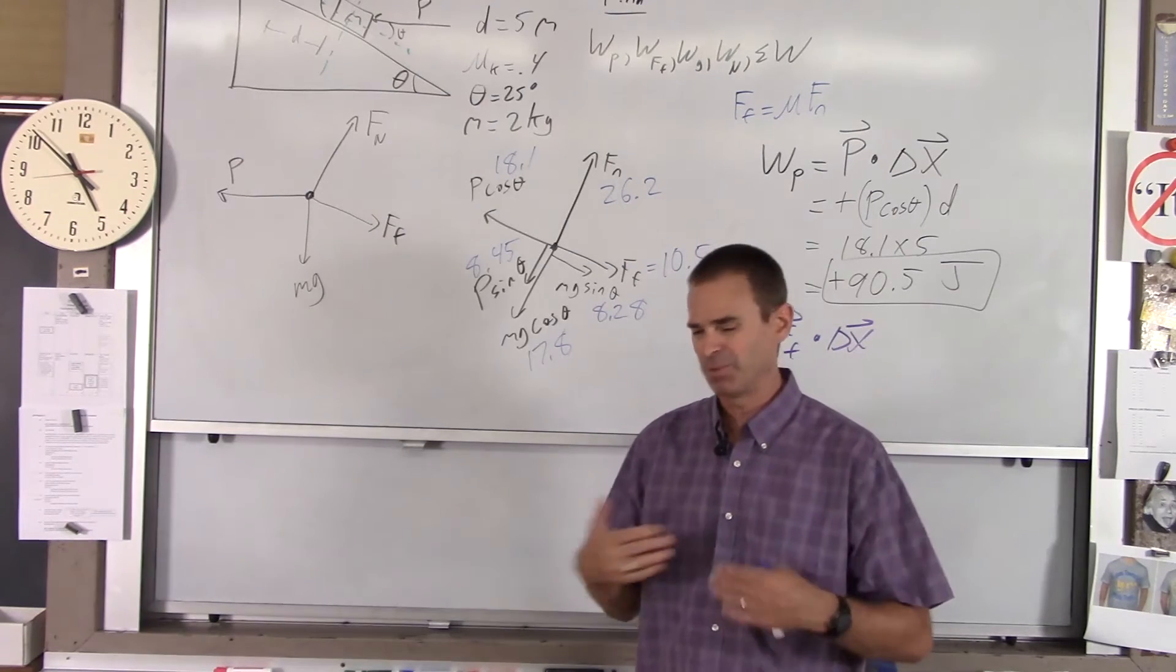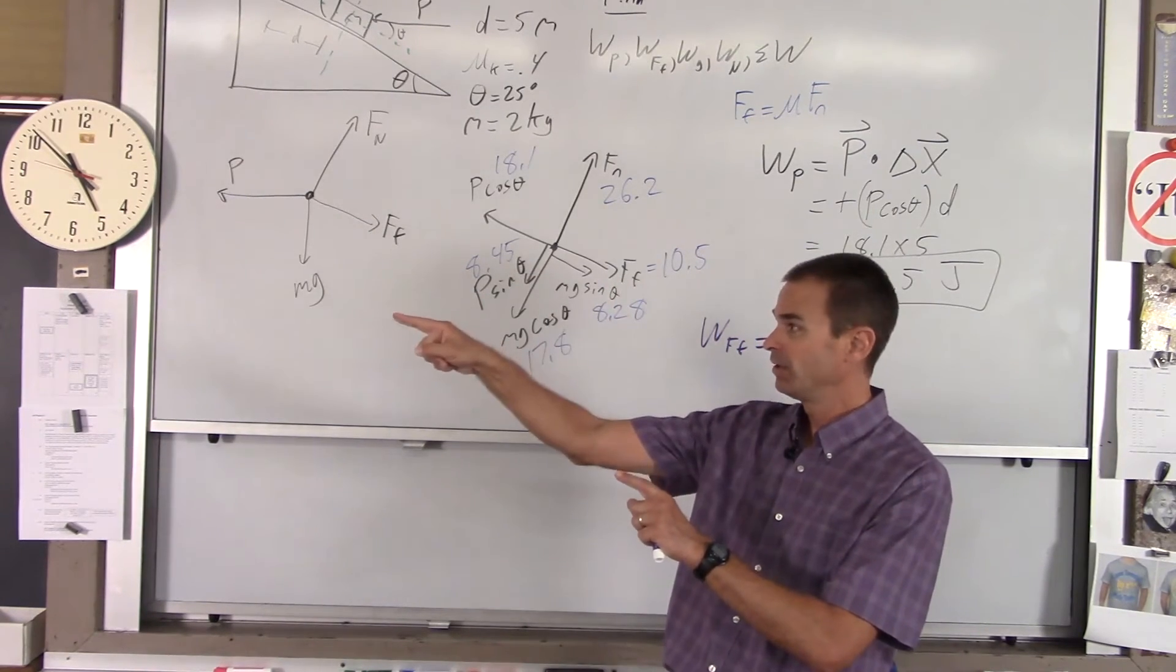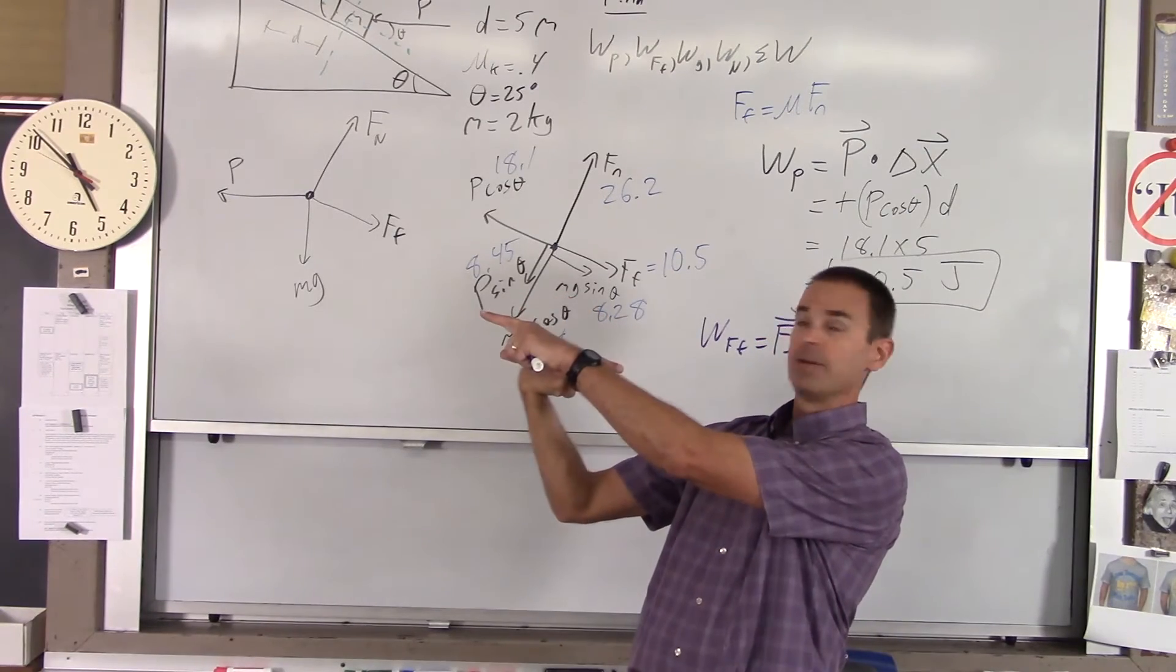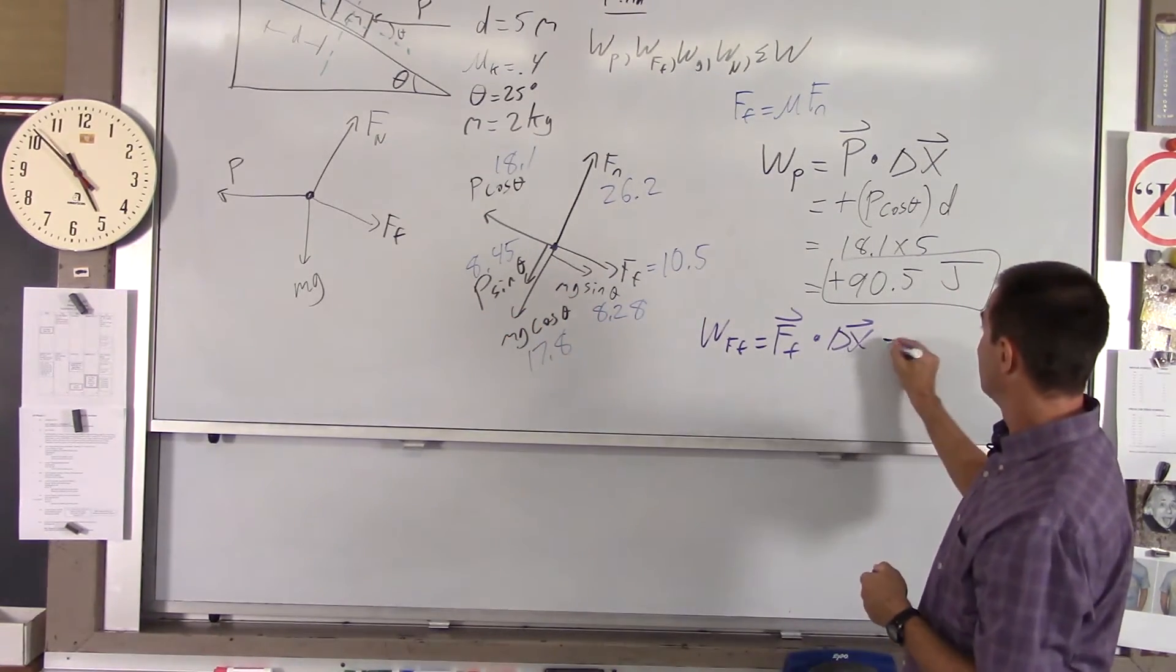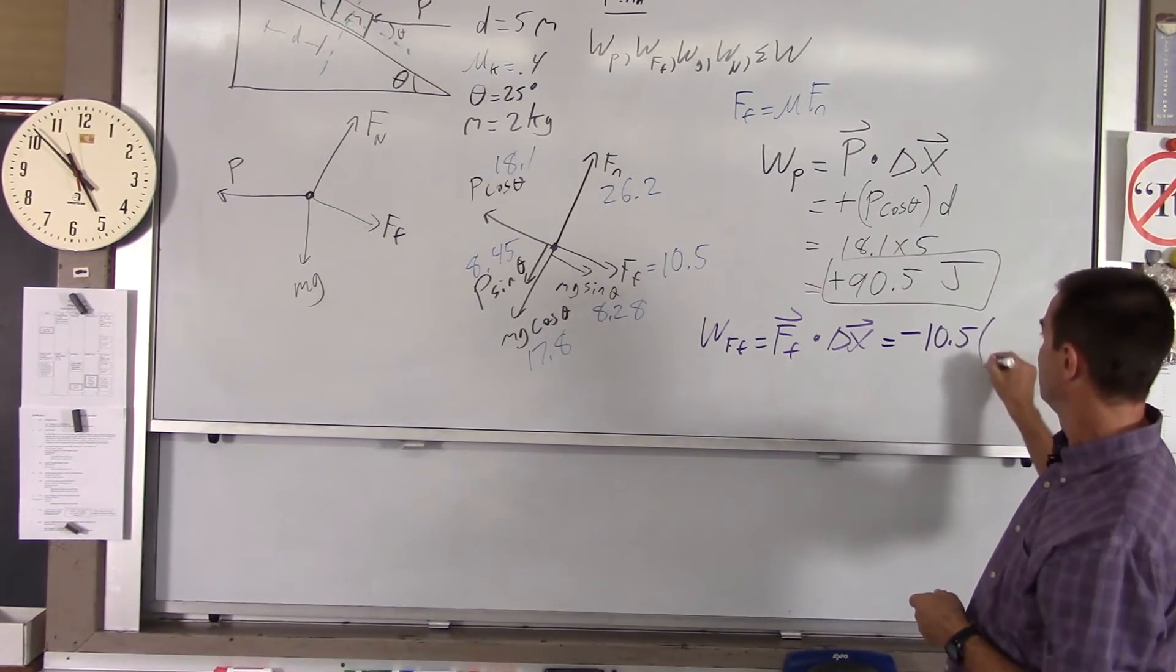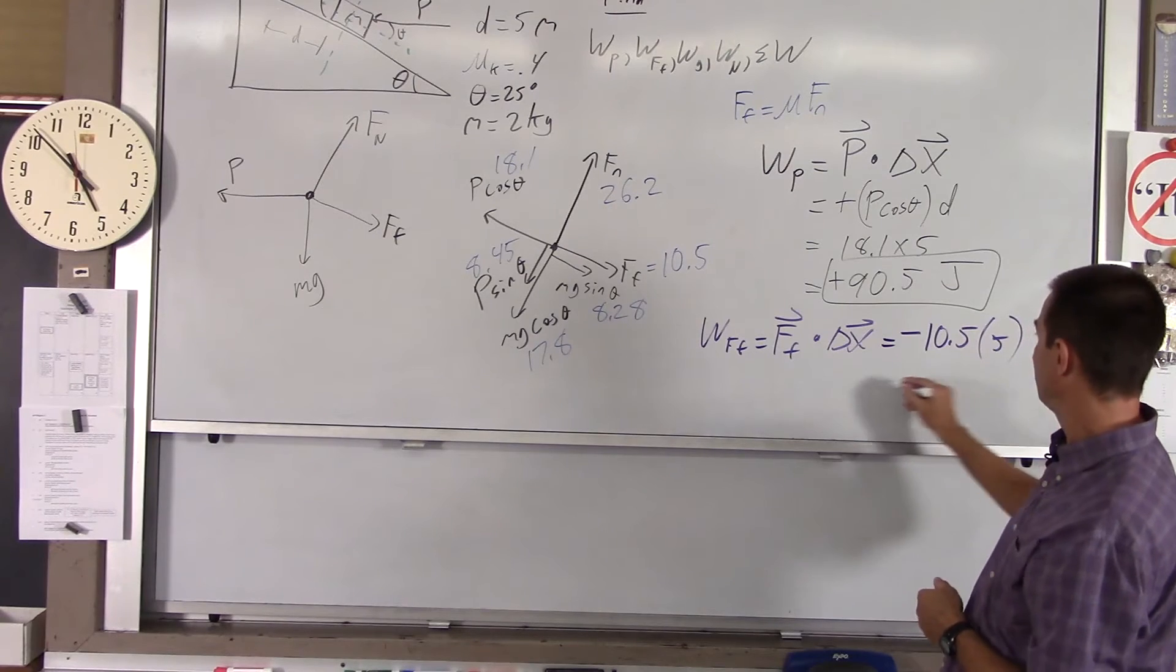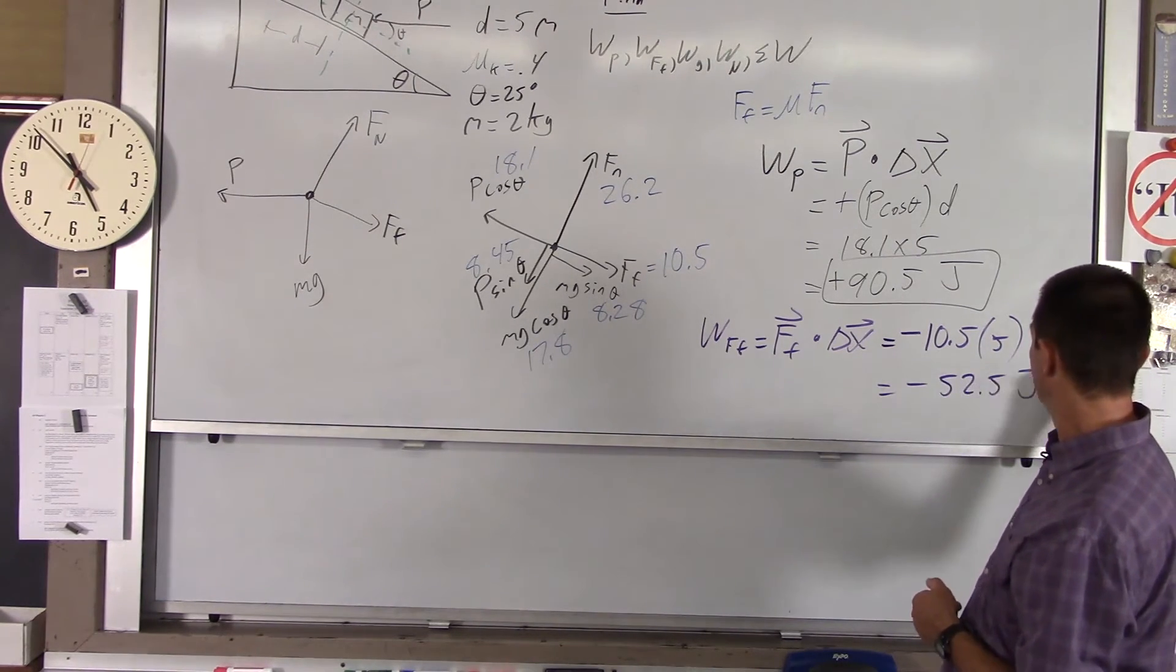My dot product will be negative. Some people say it's f times d times cosine of 180, but personally I don't think you need to do that. You just recognize that the force is that way, displacement's that way, that's going to give you negative work. So I write negative, the force of friction which is 10.5, times our distance which is five, and you get negative 52.5 joules. That's the work done by friction.